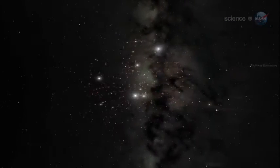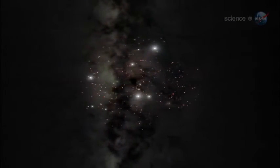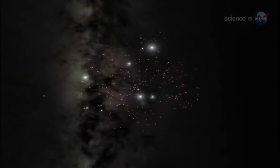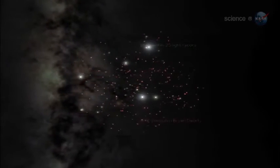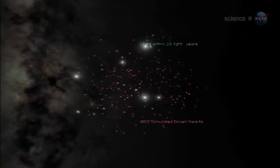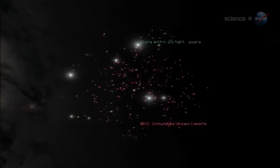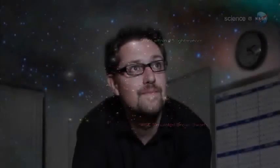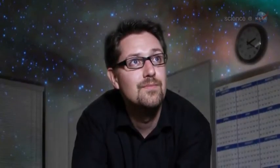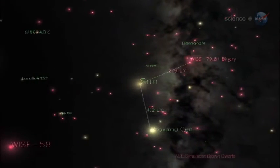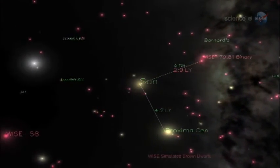Future space travelers might consider visiting Y-dwarfs for a closer look. At a distance of less than 40 light years, these stars are relatively nearby. Finding these objects so close to our sun is like discovering there's a hidden house on your block that you didn't know about, says Michael Cushing, a WISE team member at the Jet Propulsion Laboratory. It's thrilling to me to know that we've got neighbors out there and maybe more yet to be discovered.